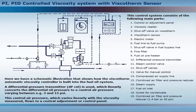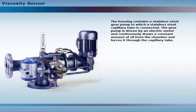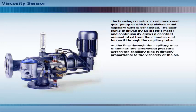Combined air filter and pressure reducer. The housing contains a stainless steel gear pump, to which a stainless steel capillary tube is connected. The gear pump is driven by an electric motor and continuously draws a constant amount of oil from the chamber and forces it through the capillary tube. As the flow through the capillary tube is laminar, the differential pressure across the capillary tube is directly proportional to the viscosity of the oil.